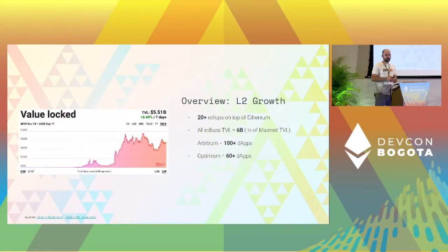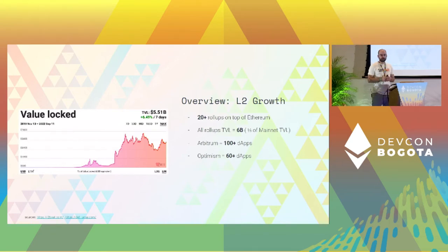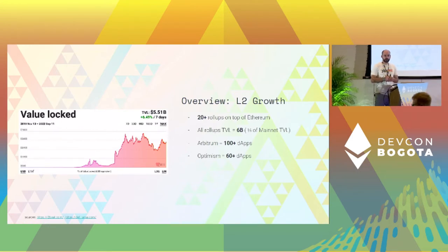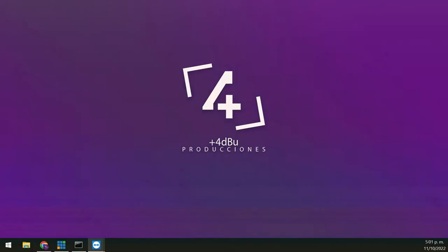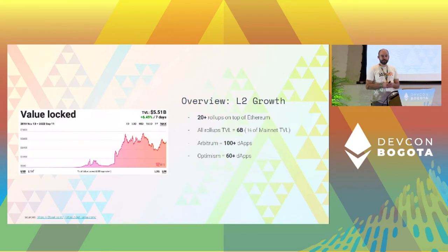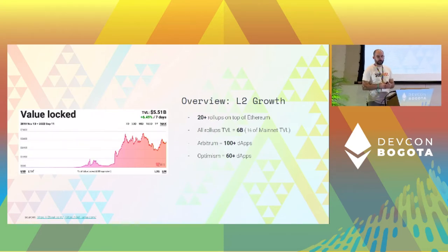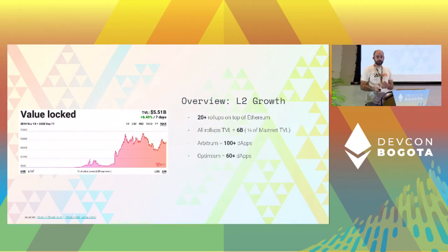Let's look at some numbers about L2 growth. At the moment there are more than 20 rollups on top of Ethereum, and the total value locked — which is a good proxy for user adoption — is around six billion, which is around one-fifth of what mainnet is. That shows things are going quite well, and two of the most important rollups, Arbitrum and Optimism, respectively have more than 160 dApps on top.